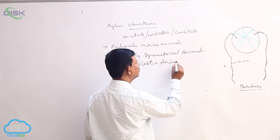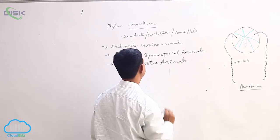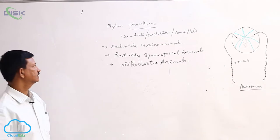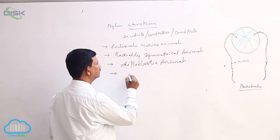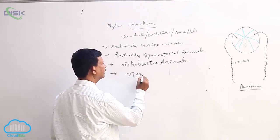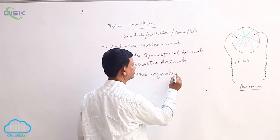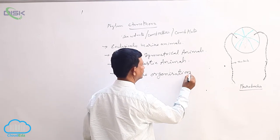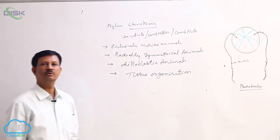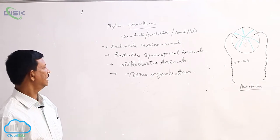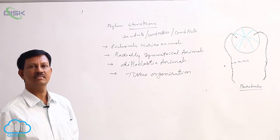The presence of two layers, ectoderm and endoderm. That's why they are known as diploblastic animals. The presence of tissue grade of organization - a group of cells accumulate and form tissues. Tissues are present in these animals but there is a lack of organ systems.